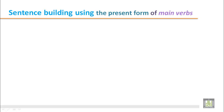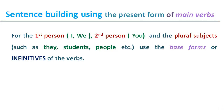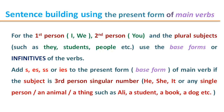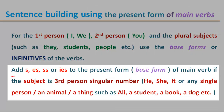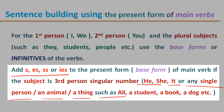Sentence building using the present tense of main verbs. In sentences we use the subject and then the main verb — it can be a BE verb or a main verb. For the first person like I and we, the second person you, and plural subjects such as they, students, people, etc., we use the base form or infinitive of the verb. However, we add S, ES, double S, or IES to the present form of the main verb if the subject is third person singular, like he, she, it, or any single person, animal, or thing.